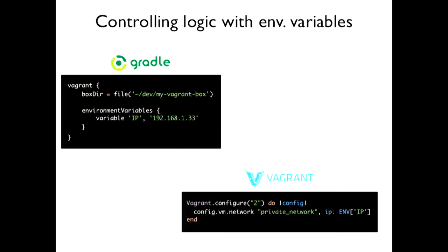You might ask: what if I want to pass anything into the Vagrant file? Looking at the Vagrant forums, the one supported way to do it is with the help of environment variables — there's no other way as far as I know. We provide support for that. You can use the DSL to specify specific key-value pairs. In this case, we want to expose a static IP for the virtual machine so we can call it later with smoke tests, functional tests, or from the browser. That configuration block is called 'environmentVariables'.